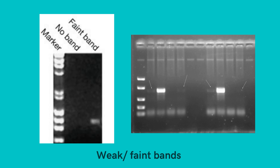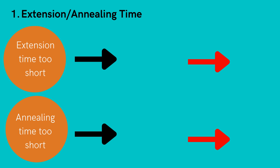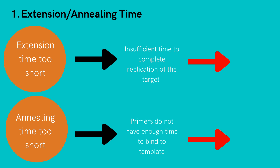As depicted here, these bands are not very visible and therefore cannot be deemed significant when analyzing the results of the PCR. The extension time of the PCR reaction might be too short, resulting in an insufficient amount of time to complete the replication of the target. This will lead to failure to produce any amplification products or might result in nonspecific short products. On the contrary, if extension time is too long, this can lead to smeared bands. If annealing time is too short, primers do not have enough time to bind to template strands, also resulting in nonspecific bands. The rule of thumb for extension time is using a time of one minute per kilobase. When the temperature is below 68 degrees Celsius, a longer extension time is required.